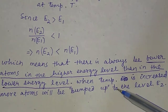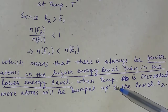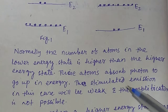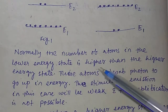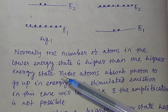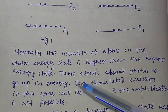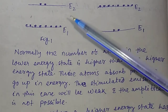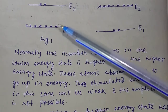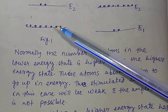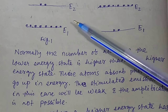From this we can conclude that there are always fewer atoms in the higher energy levels than in the lower energy level. N(E2) is the number of atoms in the higher energy level and N(E1) is the number in the lower energy level. When temperature is increased, more atoms will be pumped up to level E2. Normally atoms absorb photons and go up to the higher energy state when energy is supplied from outside.